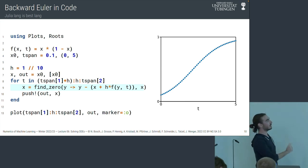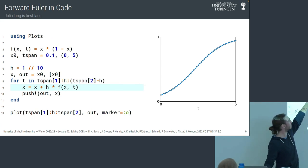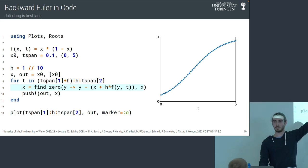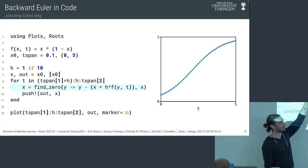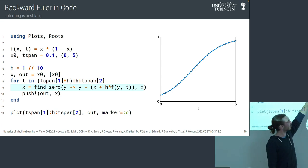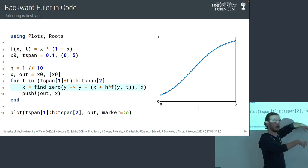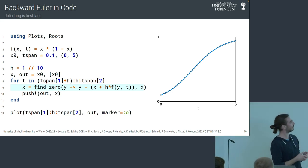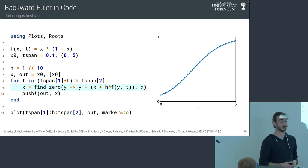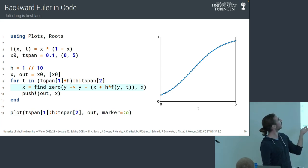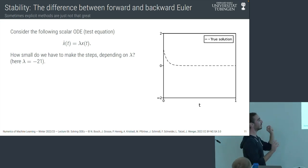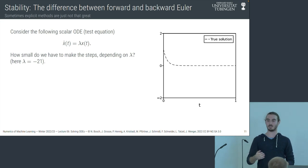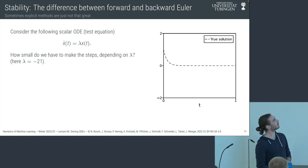One question is: why would we want to do the complicated backward Euler thing? The find_zero function is an iterative algorithm — maybe it uses Newton iteration — so this is computed many times. It is more expensive and more annoying to code. The answer is because backward Euler is a different algorithm from forward Euler, and there's one specific property that visualizes this difference between explicit and implicit methods, which is stability.